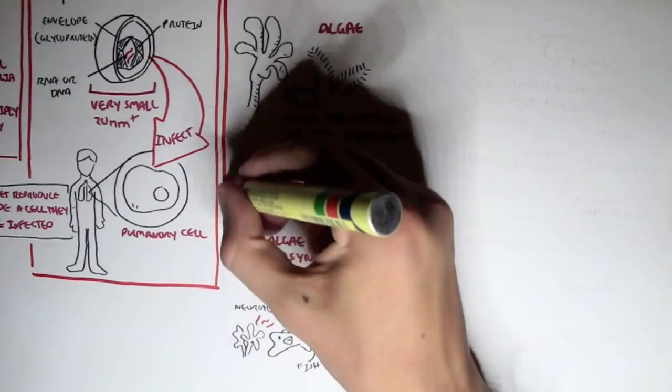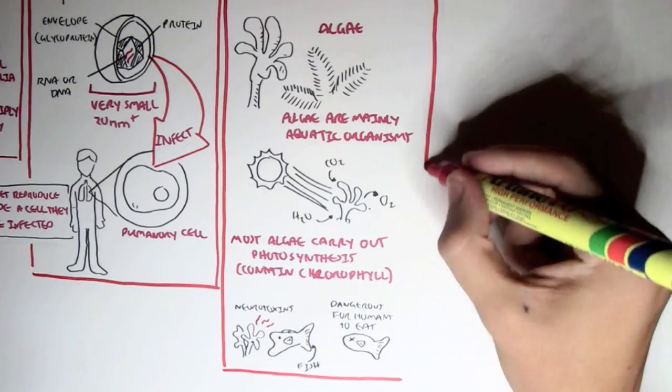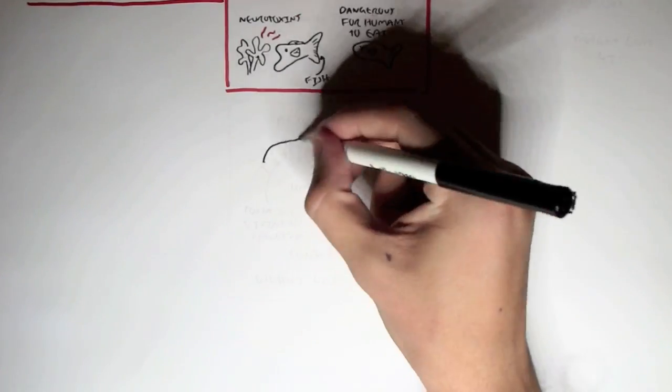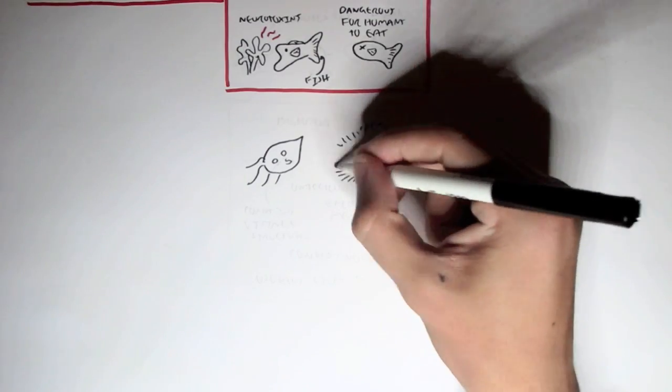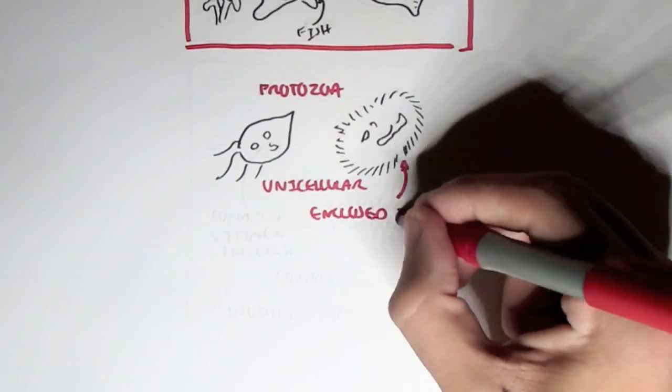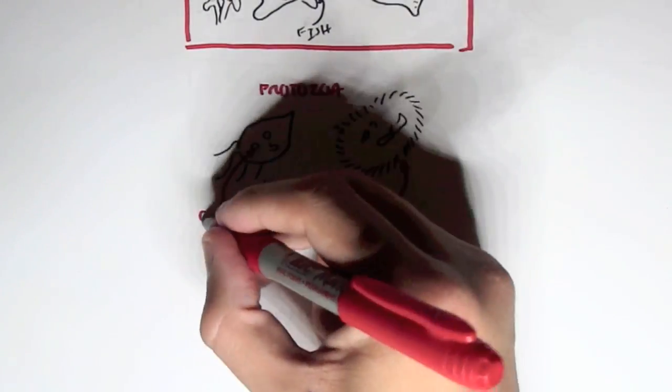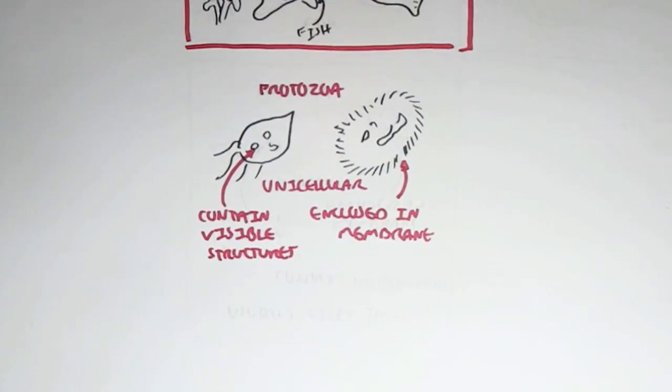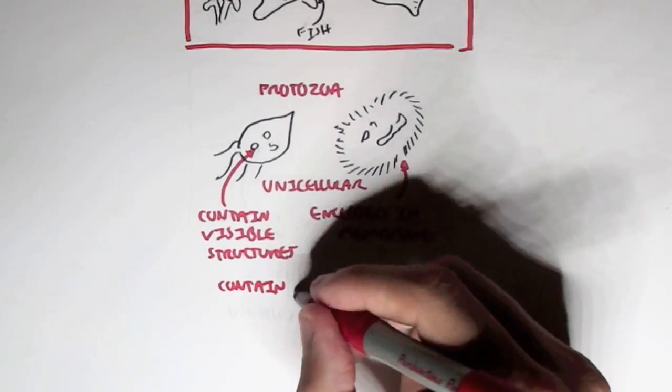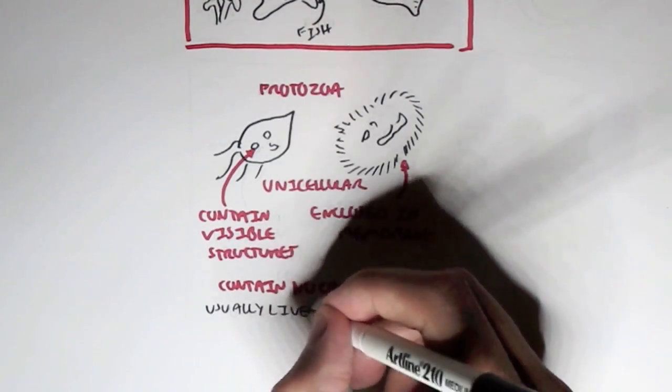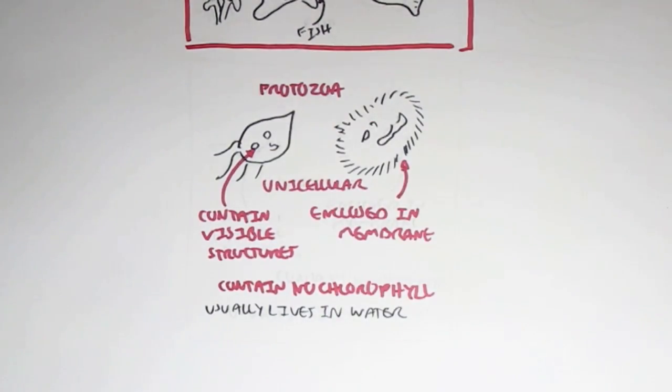The next type of protist is the protozoa. And these are also microorganisms. And they are actually unicellular. And what's fascinating about them is they actually do not contain a cell wall, but they contain some form of membrane. And also, their organelles, or their insides, are actually visible. What differs them with the algae is that they do not contain chlorophylls, and so they do not perform photosynthesis.